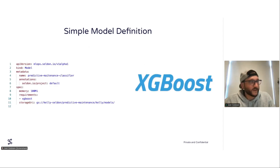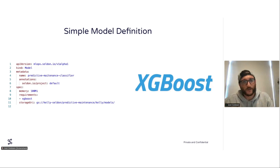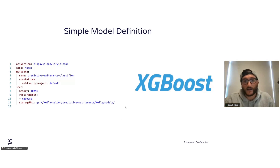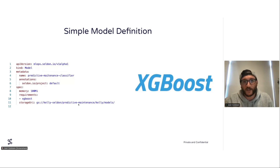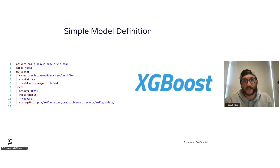Quick overview of the model definition. A simple model definition is a two-pronged approach: step one is deploy the model, step two is deploy the pipeline. What you're seeing here is that simple model definition for an out-of-the-box prepackaged runtime. All I'm doing is setting my URI, my name, the annotations for our enterprise product, memory, and then one of the most important parts — the requirements — saying that this model is an XGBoost model.